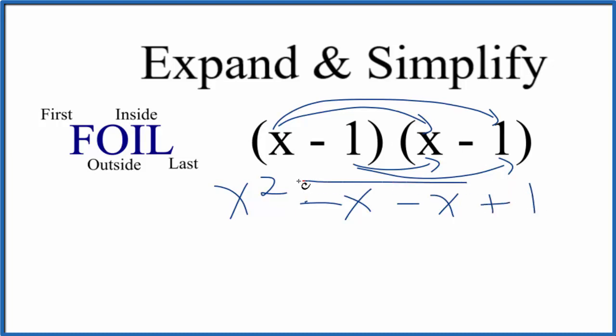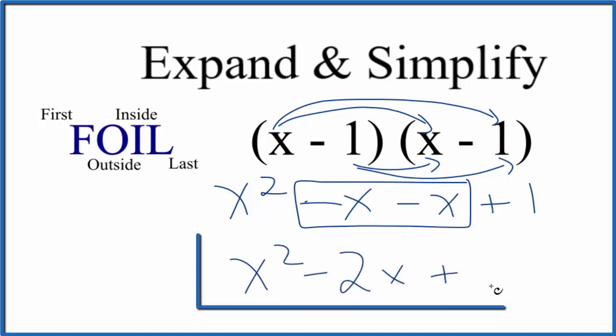These are both x terms, so we can combine them together. We'll get x squared minus 2x plus 1. So we've expanded and simplified (x - 1)(x - 1) to get x squared minus 2x plus 1.